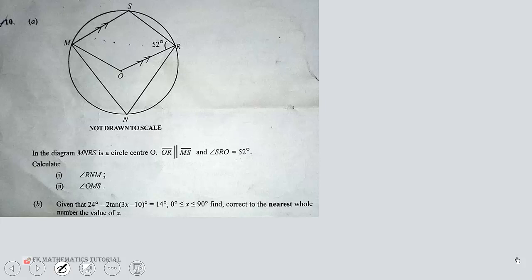Let's move on with question number 10 on plane geometry or circle theorem. In the diagram, MNRS is a circle center O. Line segment OR is parallel to line segment MS, and angle SRO is 52 degrees. Calculate angle RNM and angle OMS.